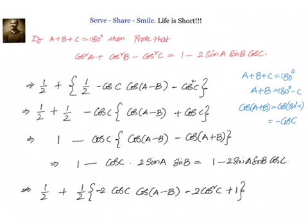This is one way of solving the problem. What we did: we wrote cos square A as 1 plus cos 2A by 2, cos square B as 1 plus cos 2B by 2, and cos square C as 1 plus cos 2C by 2. After that, we leveraged that cos A plus B is minus of cos C. We looked at the answer we want — we need cos C — so we tried to get cos C common. Then after that, we were able to apply the transformation and get 1 minus 2 sin A sin B cos C.